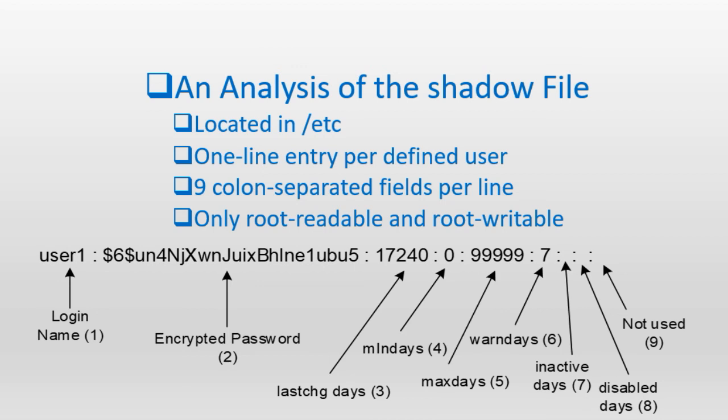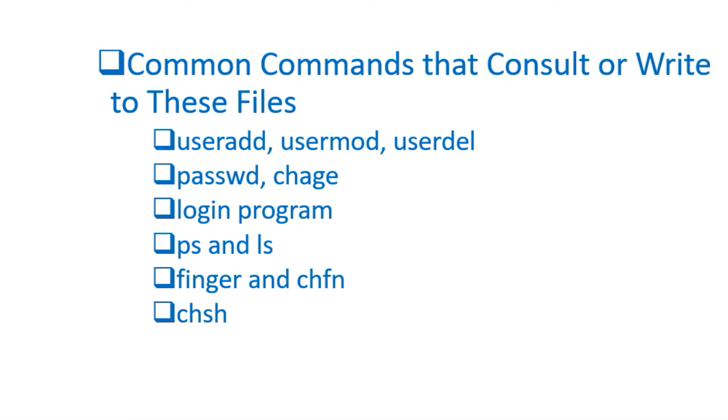Field number seven holds the maximum allowable number of days of user inactivity. An empty field, which is the default, allows the user to log into the system after any length of inactivity. Field number eight expresses the number of days since the Unix epoch after which the account will expire. An empty field, which is the default, sets no expiry on the account. Field number nine is the last field and is currently reserved for future use.